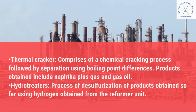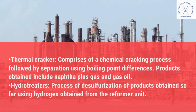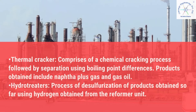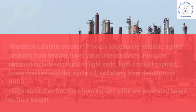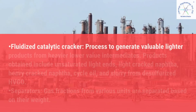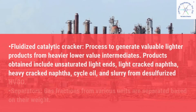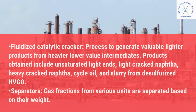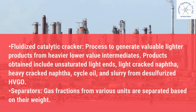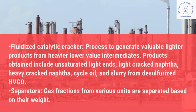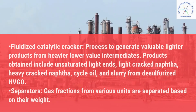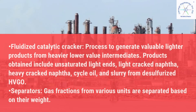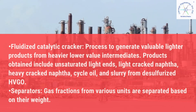Hydrotreaters carry out desulphurization of products obtained so far using hydrogen obtained from the reformer unit. The fluidized catalytic cracker is a process to generate valuable lighter products from heavier, lower-value intermediates. Products obtained include unsaturated light ends, light cracked naphtha, heavy cracked naphtha, cycle oil, and slurry from desulphurized HVGO.